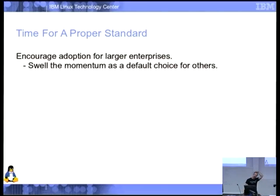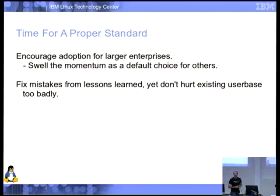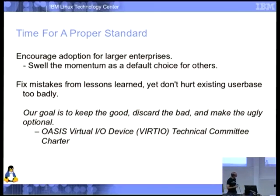Importantly, a standard does draw people. Nobody else is trying to create something that works across all operating systems and all hypervisors — they're all interested in their own hypervisors. Having an actual TM standard has some draw, particularly with large organizations. It makes it an easier choice for others to follow, which helps VirtIO, and standards across this space increase competition and reduce lock-in. But while we're there, why not try to fix up some stuff? To quote from our charter: keep the good, discard the bad, and make the ugly optional.